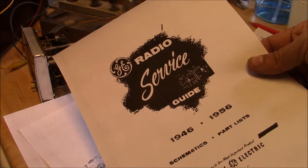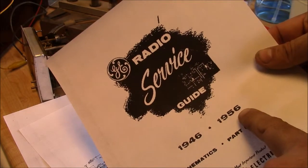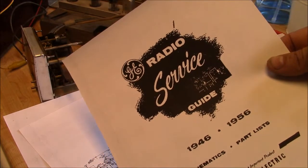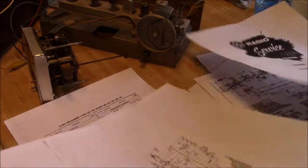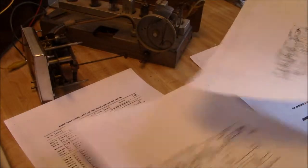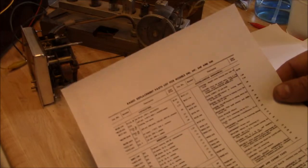Here it says General Electric Radio Service Guide 1946 to 56, so there's 10 years. What's nice about this is it actually has a parts list on it, which is great.